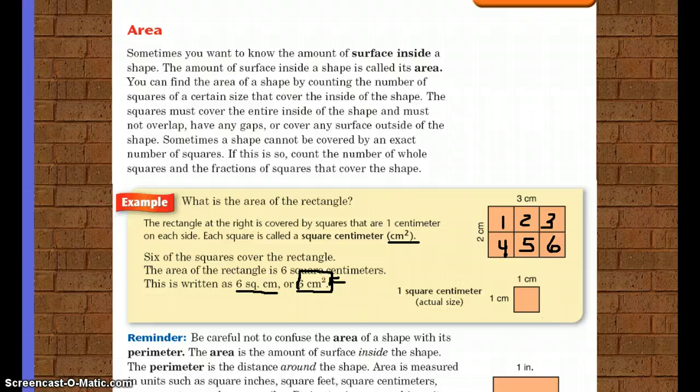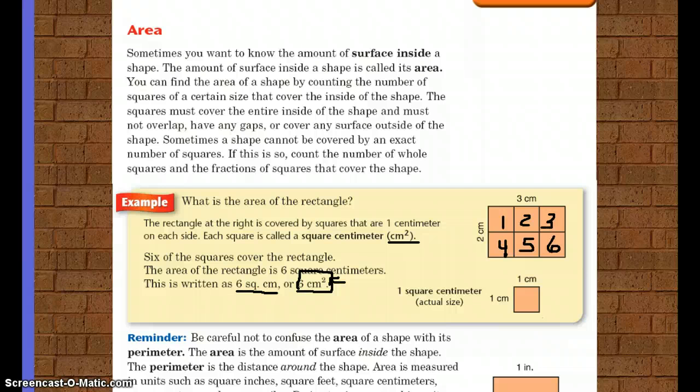Remember, don't confuse area of a shape with its perimeter. The area is the amount of surface inside the shape. The perimeter is the distance around the shape.